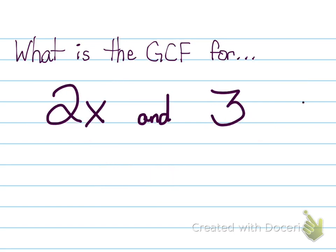Sometimes your GCF can be one — for example, between two and three the largest number that can divide into both of those is one. Now I know we always ask which one is the smallest variable, but in this particular example both values do not have a variable, so you wouldn't even ask that question. So my GCF will just be one. And that's it!